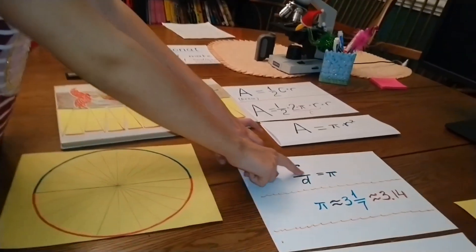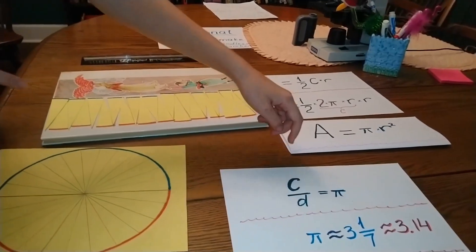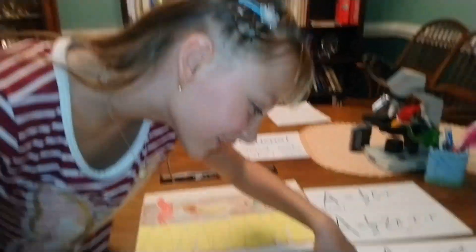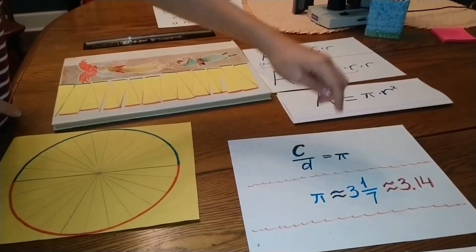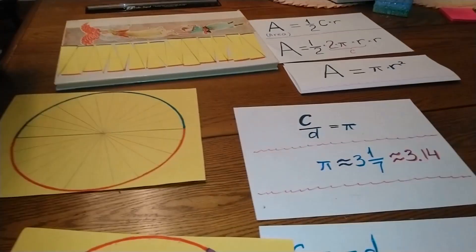Circumference divided by diameter equals Pi, the useful number.